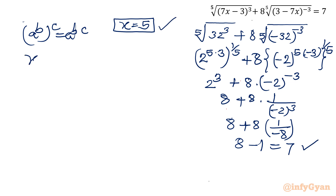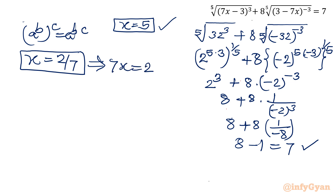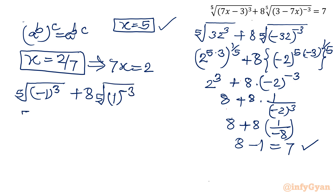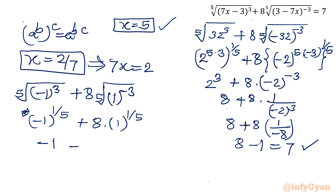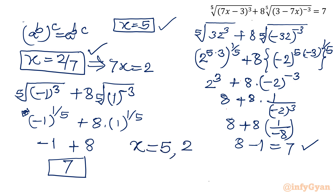Now verify x equals 2 over 7, meaning 7x equals 2. Substituting: the first term is the 5th root of (2 minus 3) cubed, which is the 5th root of (minus 1) cubed equals (minus 1)^(3/5) equals minus 1. The second term: (3 minus 2) to the power minus 3 times the 5th root gives 1 to the power minus 3 equals 1, and 1^(1/5) equals 1, so 8 times 1 equals 8. Overall: minus 1 plus 8 equals 7. This is also verified. Our final solutions are x equals 5 and x equals 2 over 7.